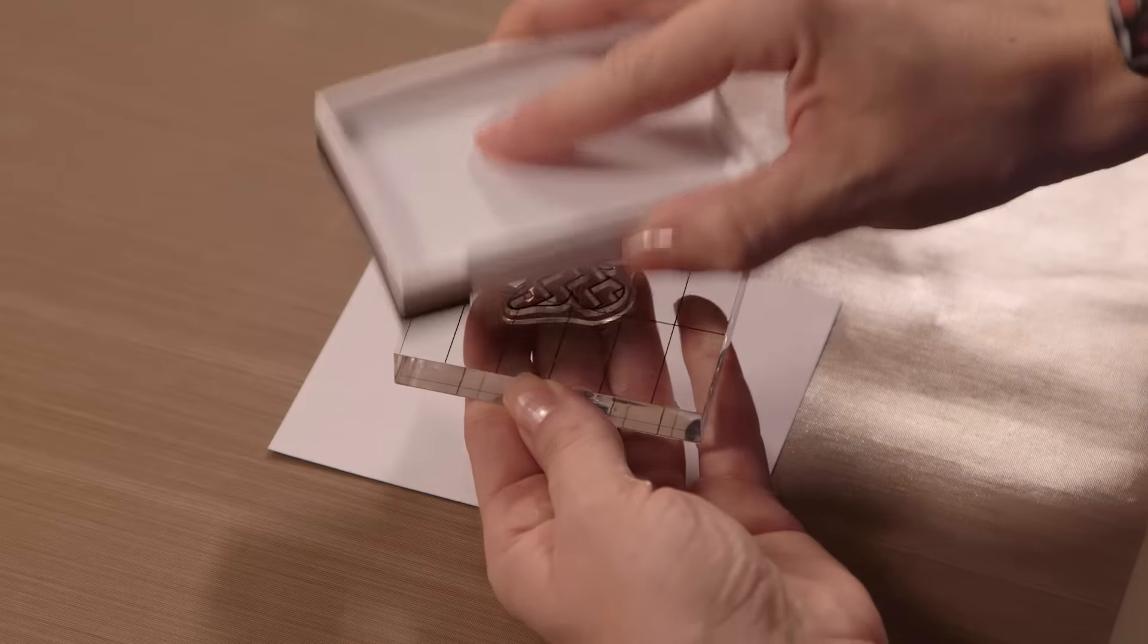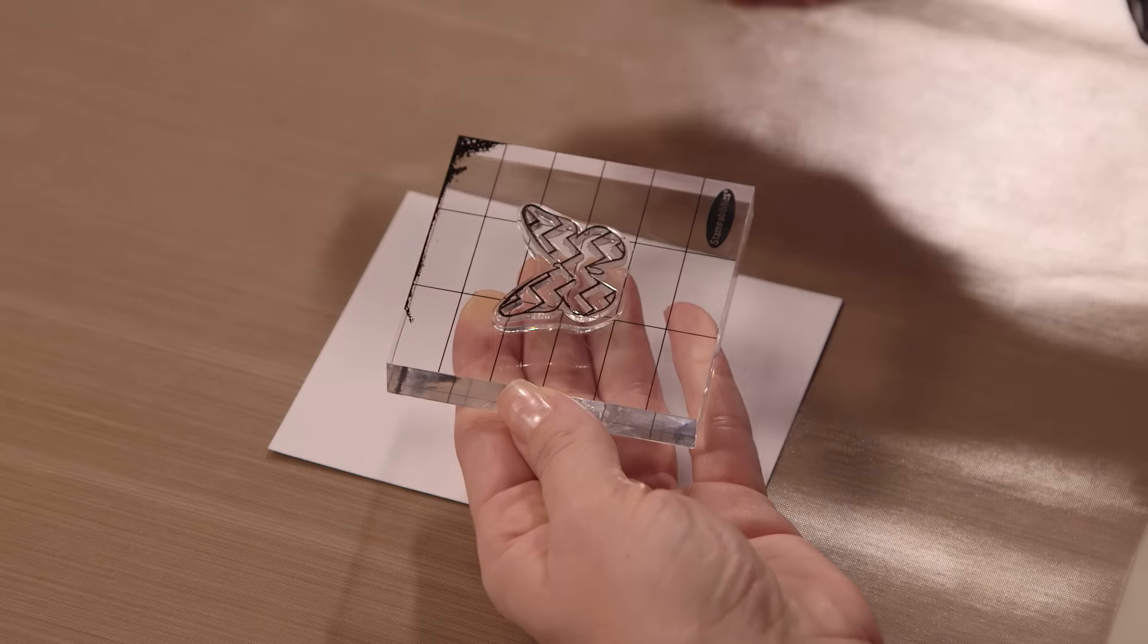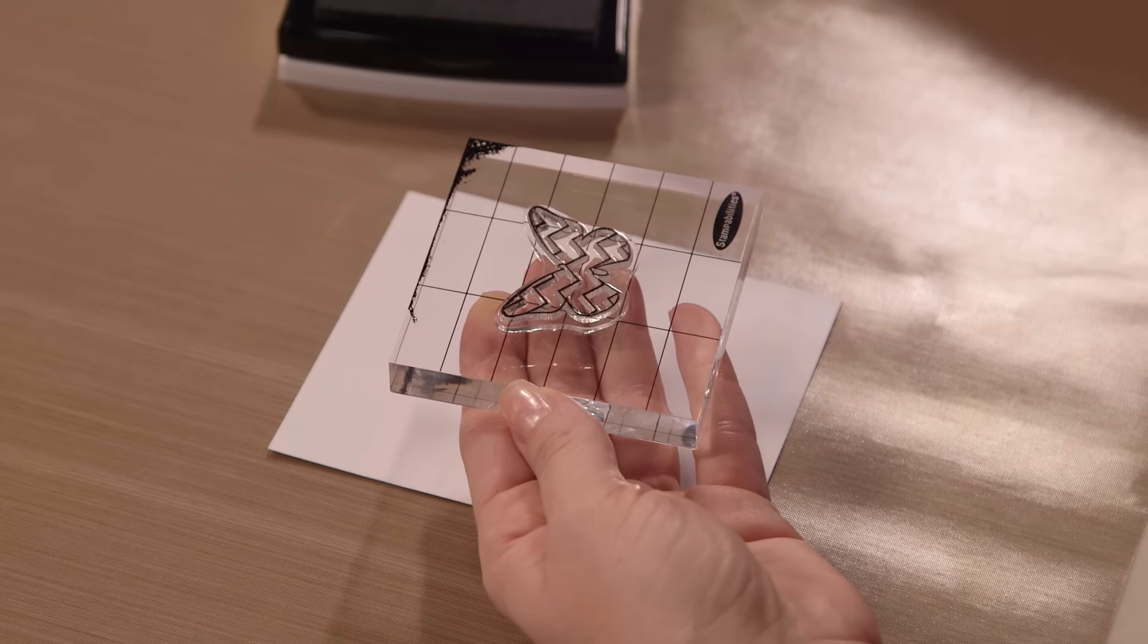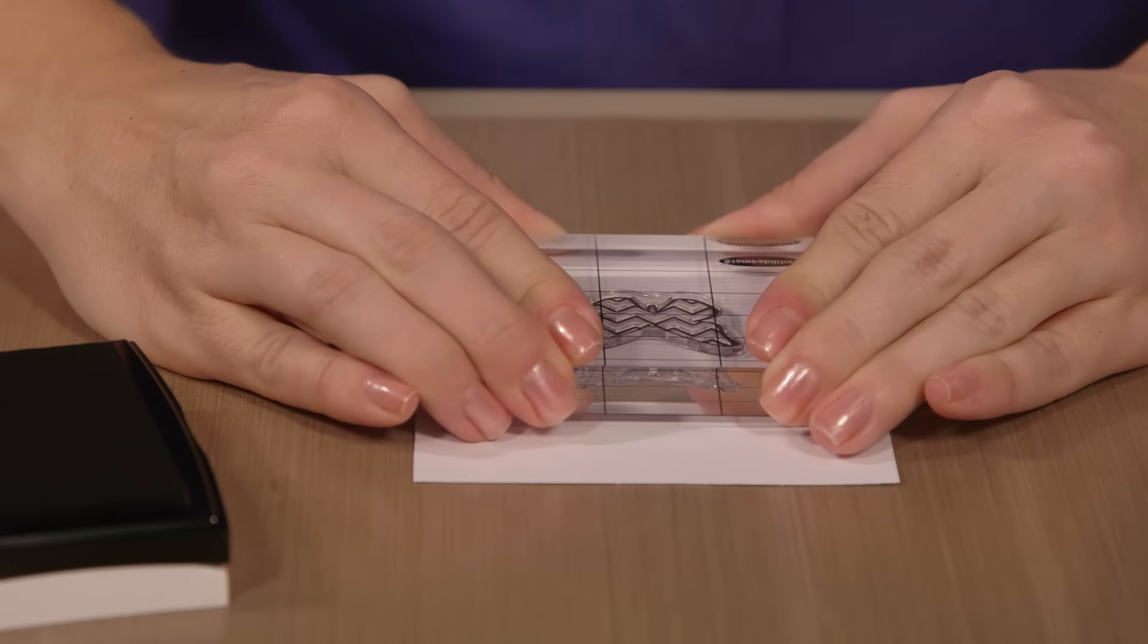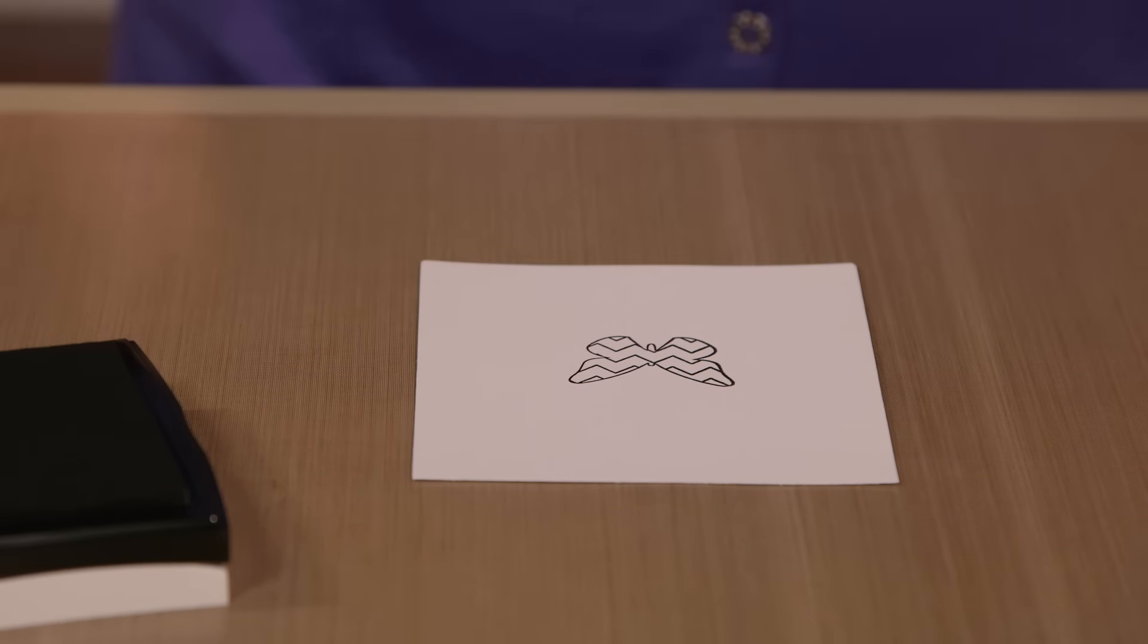When you're ready to put the stamp to paper, make sure there isn't excess ink on the stamp or block that could leave unwanted marks. Press directly downward on the stamp and resist the urge to wiggle it. That can cause your stamp to shift.